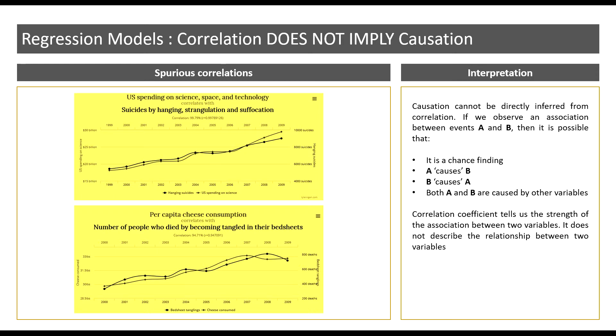We can safely conclude that correlation does not imply causation. Therefore, in order to establish a cause and effect relationship between variables, we need to build regression models, as this cause and effect will then help with the process of prediction.